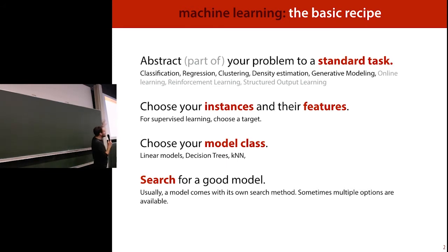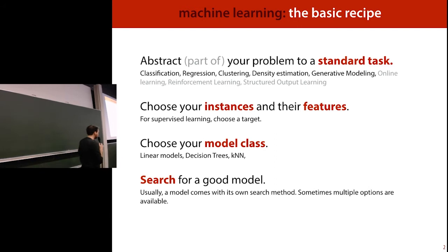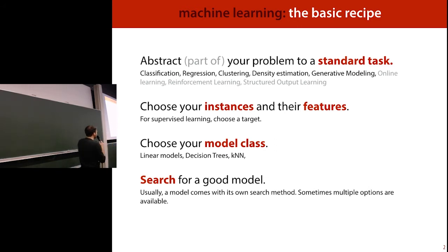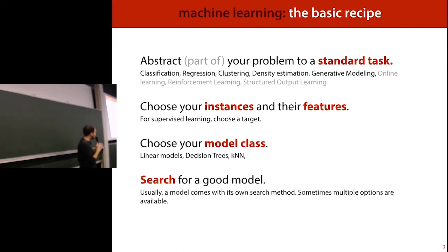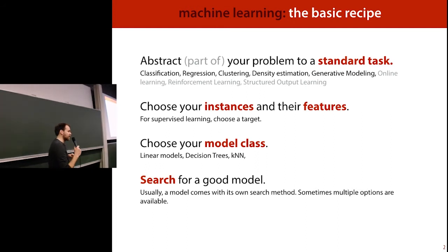The basic idea is that if you have some problem you want to solve that you think might be useful to use machine learning for, these are the steps you take. You abstract your problem to a standard task like classification or regression. Then you choose your instances, their features, and sometimes a target value. You pick a model class — something like linear models, decision tree classifiers, KNN classifiers. You apply it to these instances, search your model space for a good model, and out pops a good model that solves your problem.